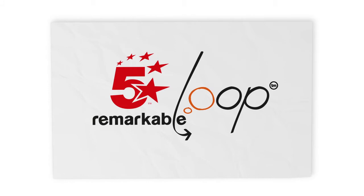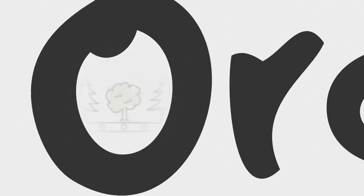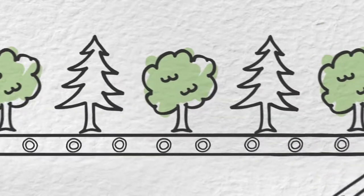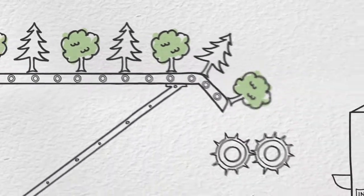This is a five-star remarkable loop sheet of paper. A normal sheet of paper begins its life as wood pulp from freshly cut trees. It takes nearly three tons of wood pulp to make one ton of office paper.